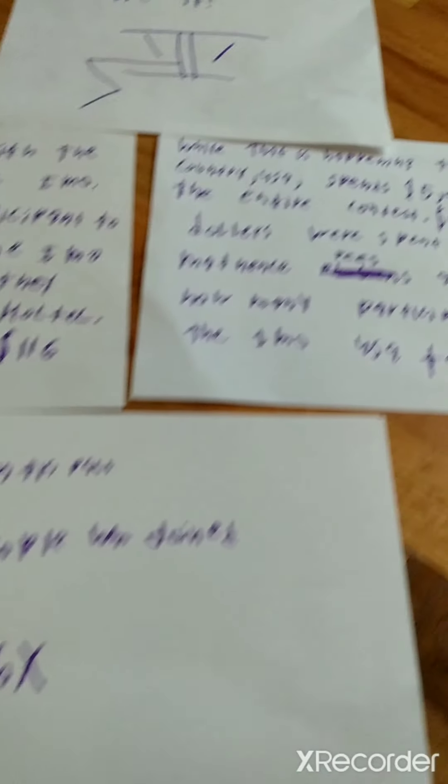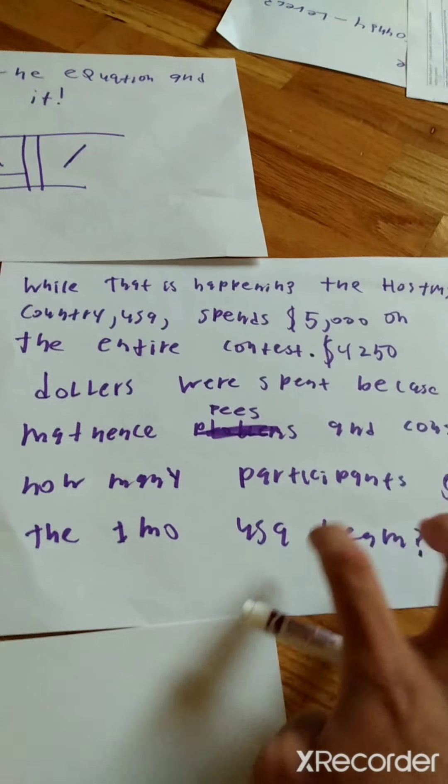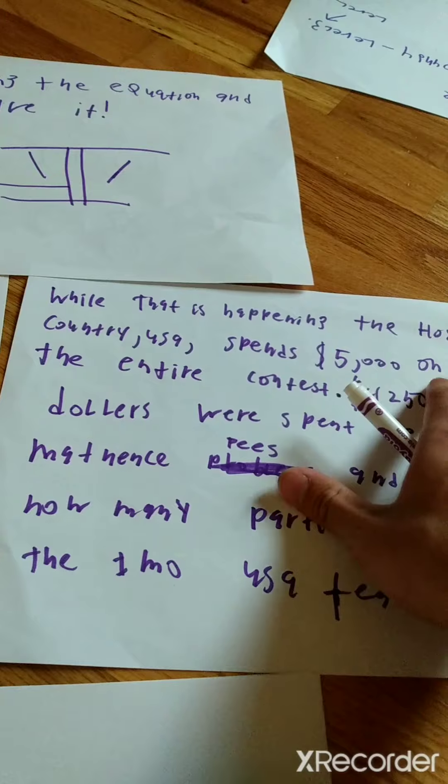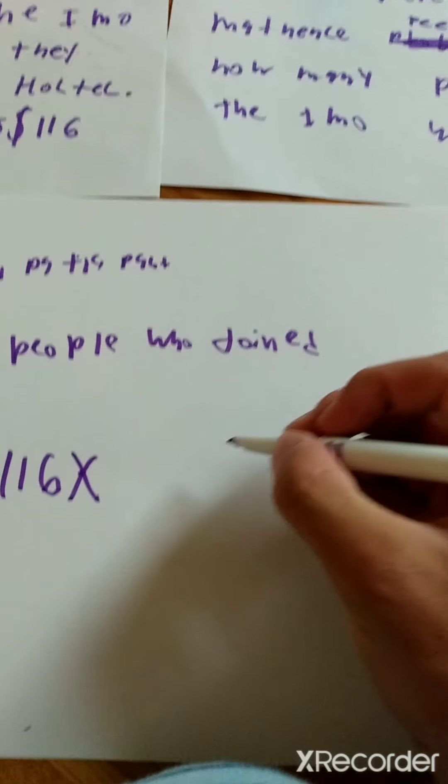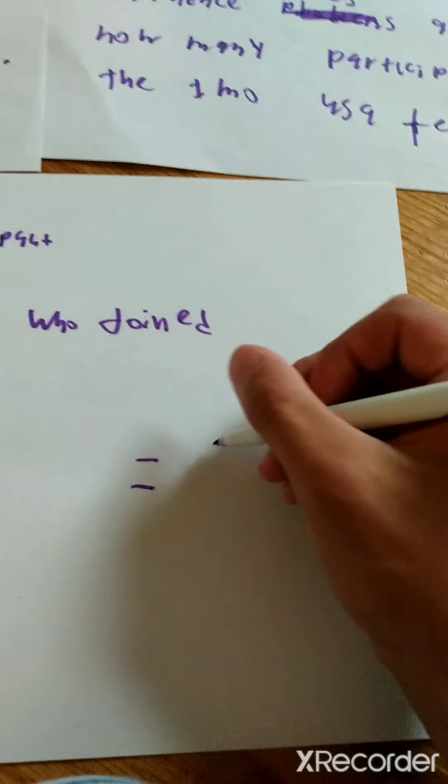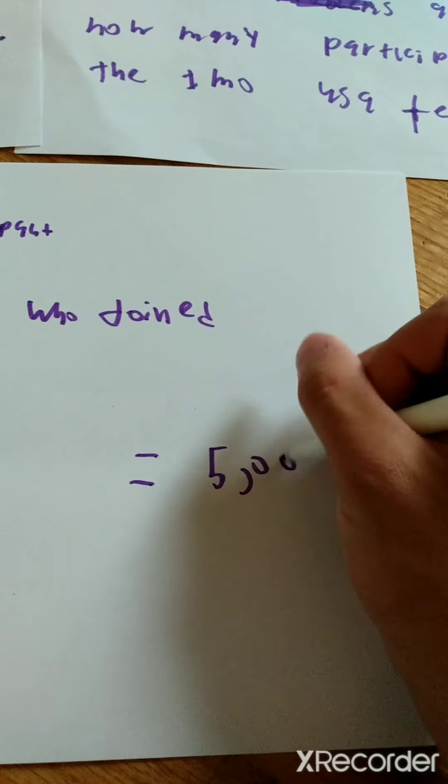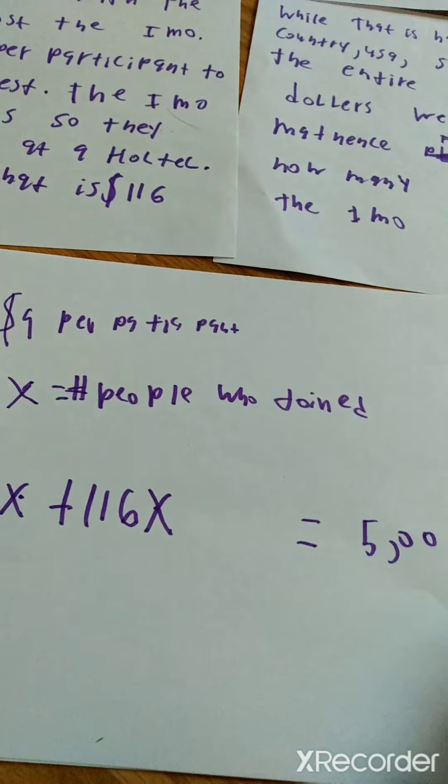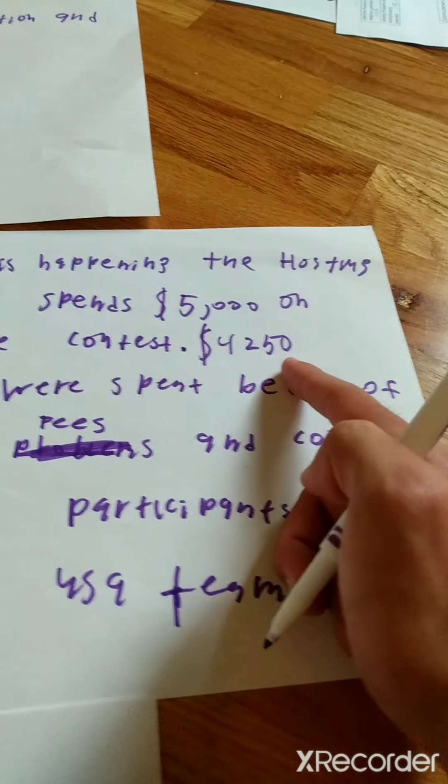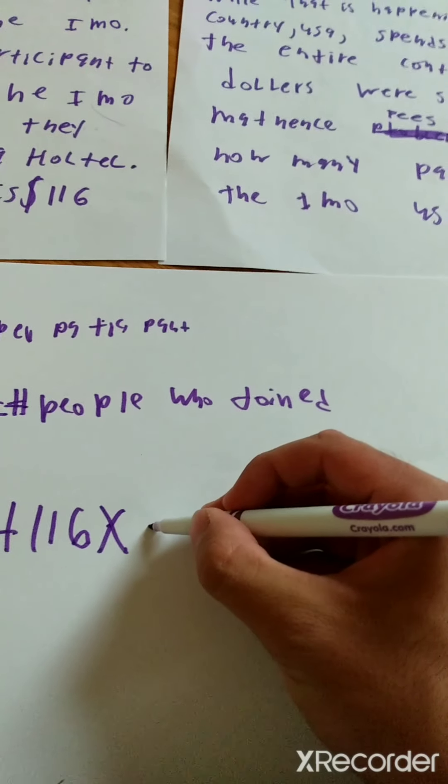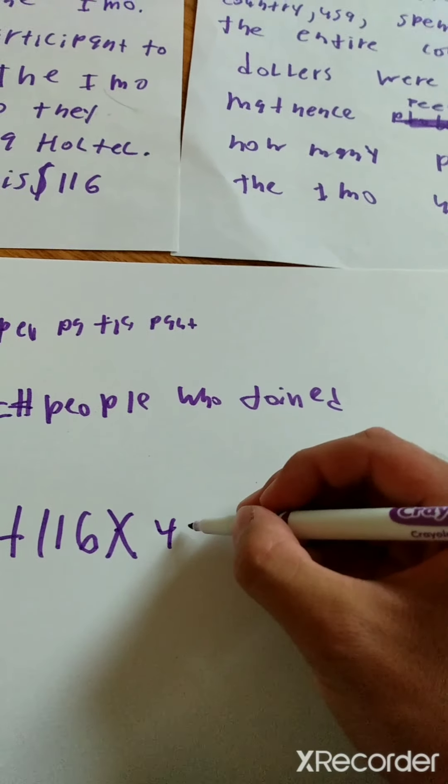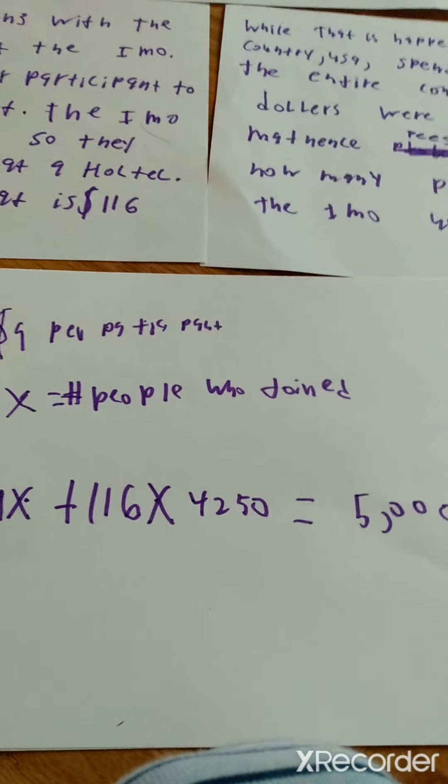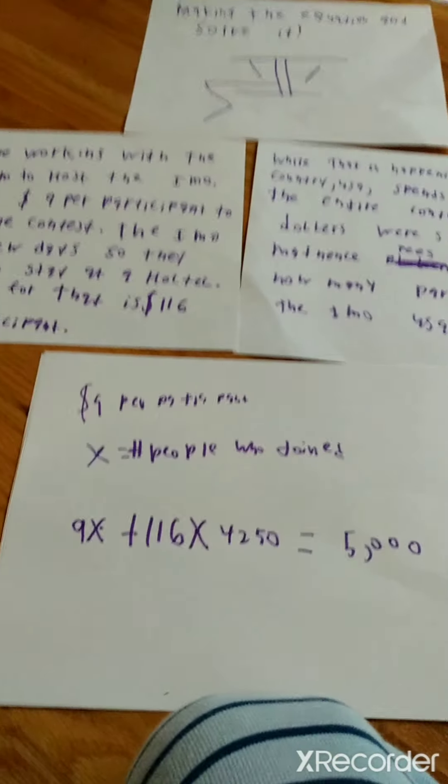Then we have on the second page, while that was happening, the hosting country, the USA, spends $5,000 on the entire contest. So that's going to mean that all this is going to equal to $5,000, because that includes the hotel price, the maintenance cost, and the registration fee. But the maintenance cost was $4,250. So we're going to put that right next to the equal sign. $4,250, just for getting this contest ready and the technology ready. So there we have it.